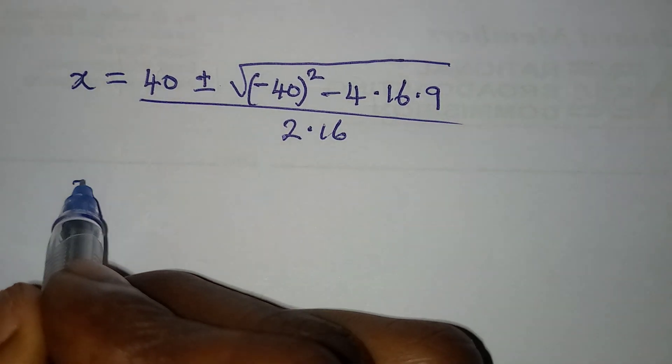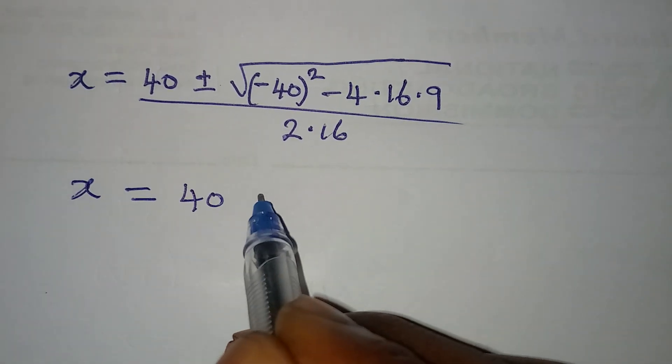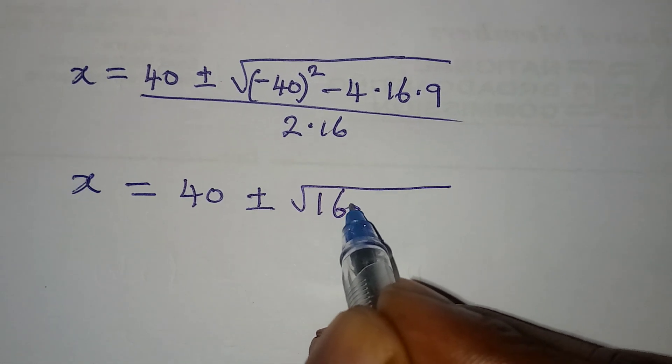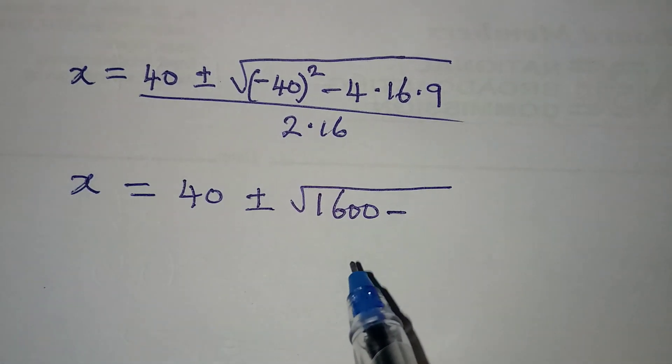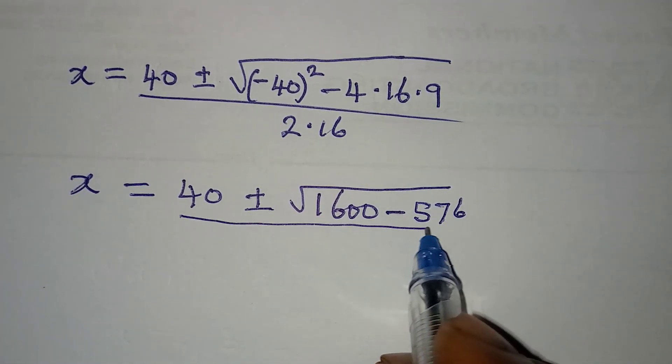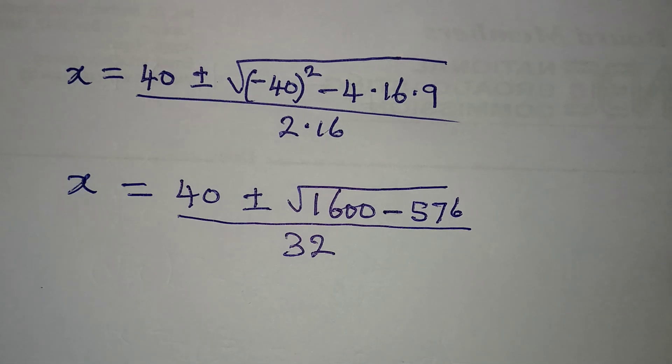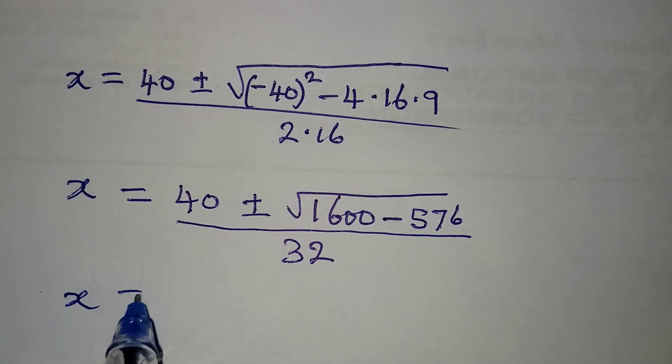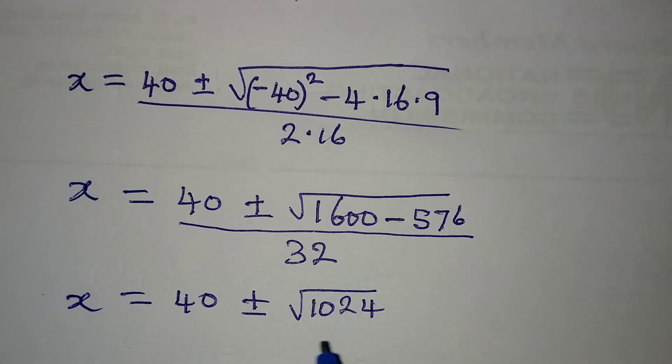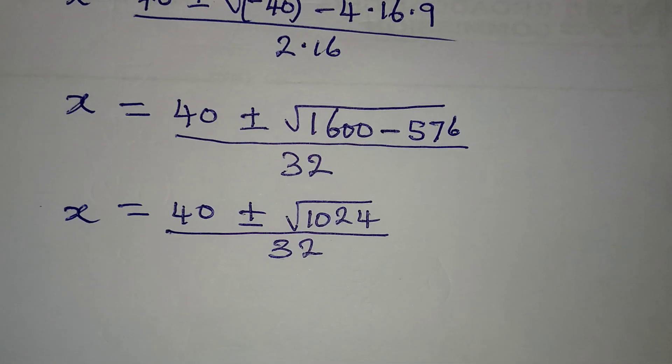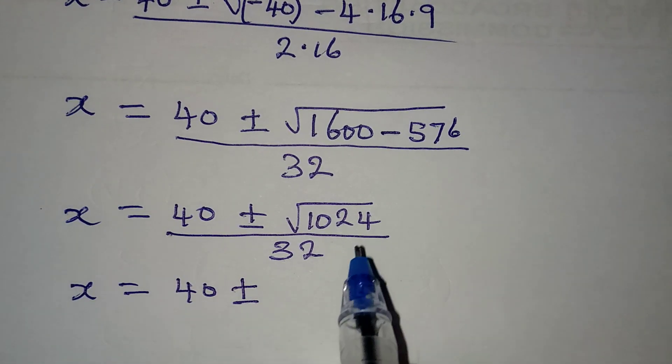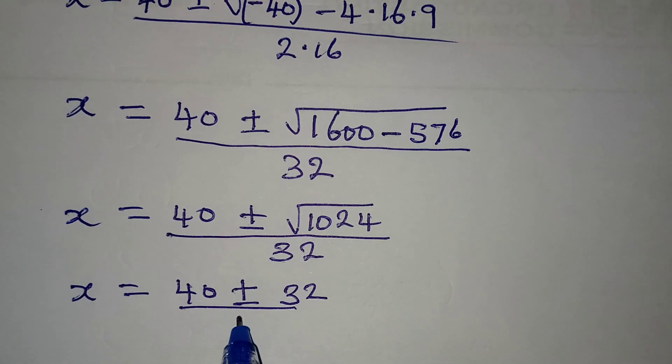So x will be equal to 40 plus or minus, minus 40 squared will give us 1,600. Then minus, if I multiply 4 and 16 and 9, I'll have 576. Then the whole of this will be over 32, that is 2 times 16. So x will be equal to 40 plus or minus, here if you subtract this, you have 1,024, and this will be over 32. Meaning that x is equal to 40 plus or minus, square root of 1,024 is actually 32, and this will be over 32 as well.